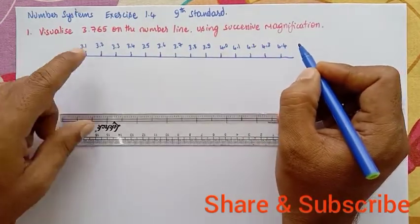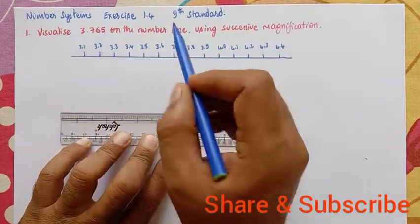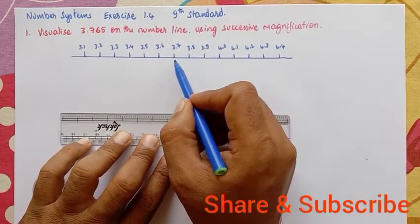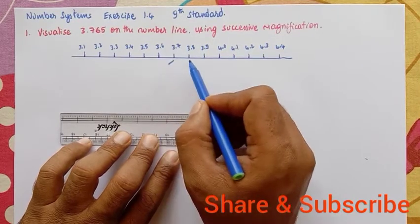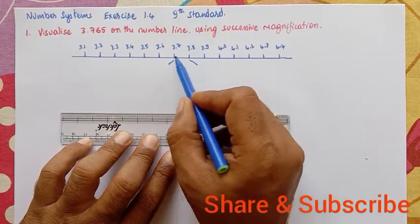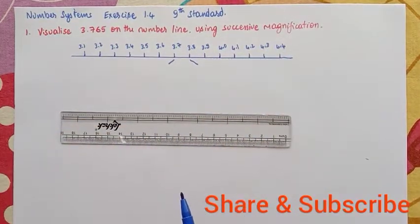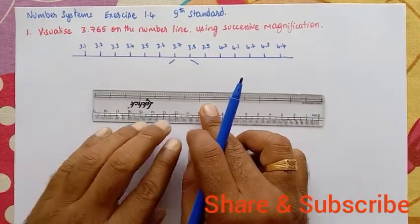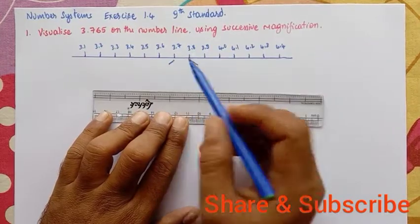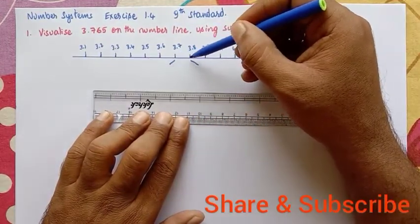Now, the point 3.765 exists only after 3.7 and between 3.7 and 3.8. Let us magnify this part into 10 equal parts.